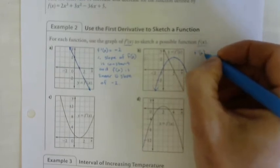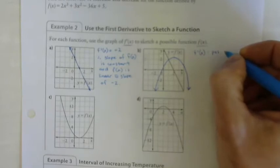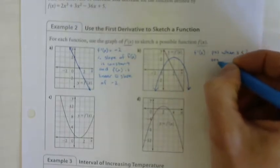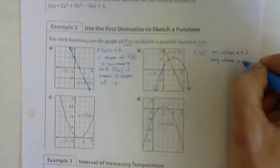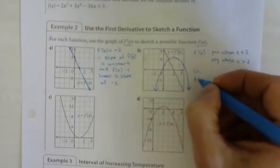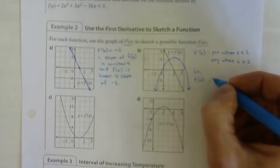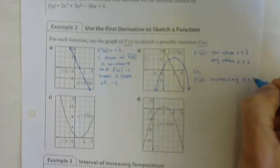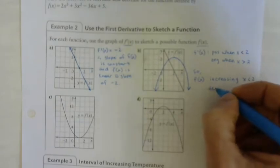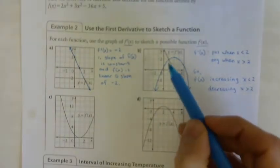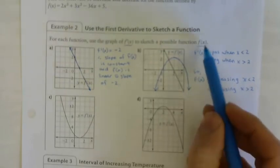f prime of x is positive when x is less than two, and negative when x is greater than two. So f of x is increasing for x less than two and decreasing for x greater than two. We don't know the vertex position, but we know the parabola opens downward.